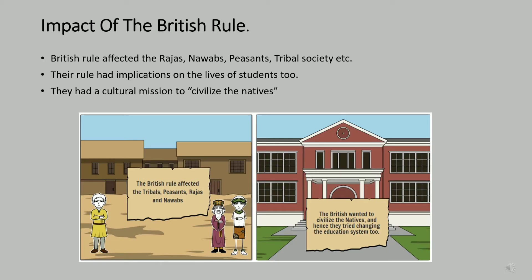We learned from the previous chapter that British rule affected a whole lot of people — Rajas, Nawabs, Tribals, Peasants, etc. But their rule also brought changes in the lives of students and teachers. They were on a cultural mission — a mission to civilize the natives. They considered Indians as people who needed civilization, and believed our customs and values had to be reformed.